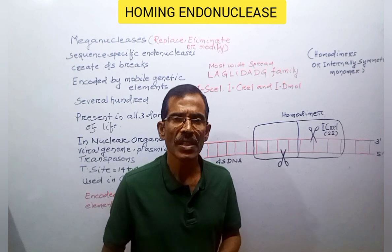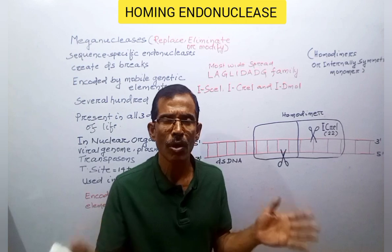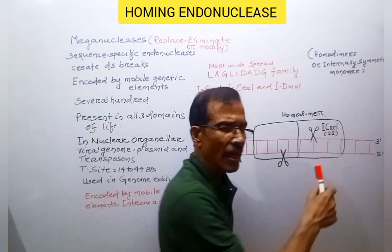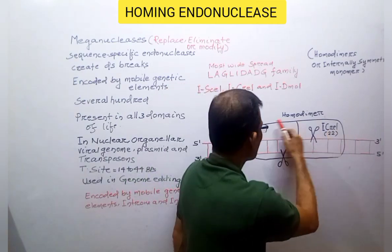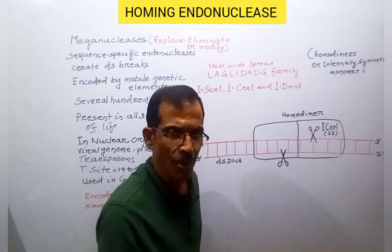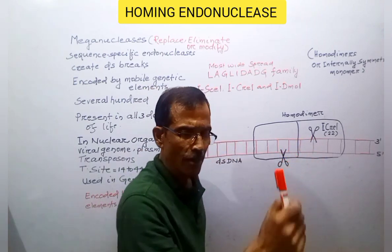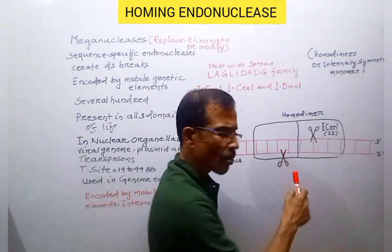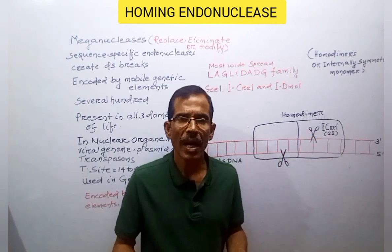Homing endonucleases function as homodimers or internally symmetrical monomers. One example is the intron-encoded endonuclease in Chlamydomonas reinhardtii. This enzyme functions as a homodimer in which two monomers associate to recognize a specific sequence which is 22 base pairs long. This enzyme cleaves at a specific location in both strands of the DNA.